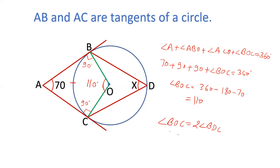And we know the value of BOC. Therefore, the value of BDC will be half of 110. And half of 110 is 55. So angle BDC is 55. So the value of X is 55 degrees.